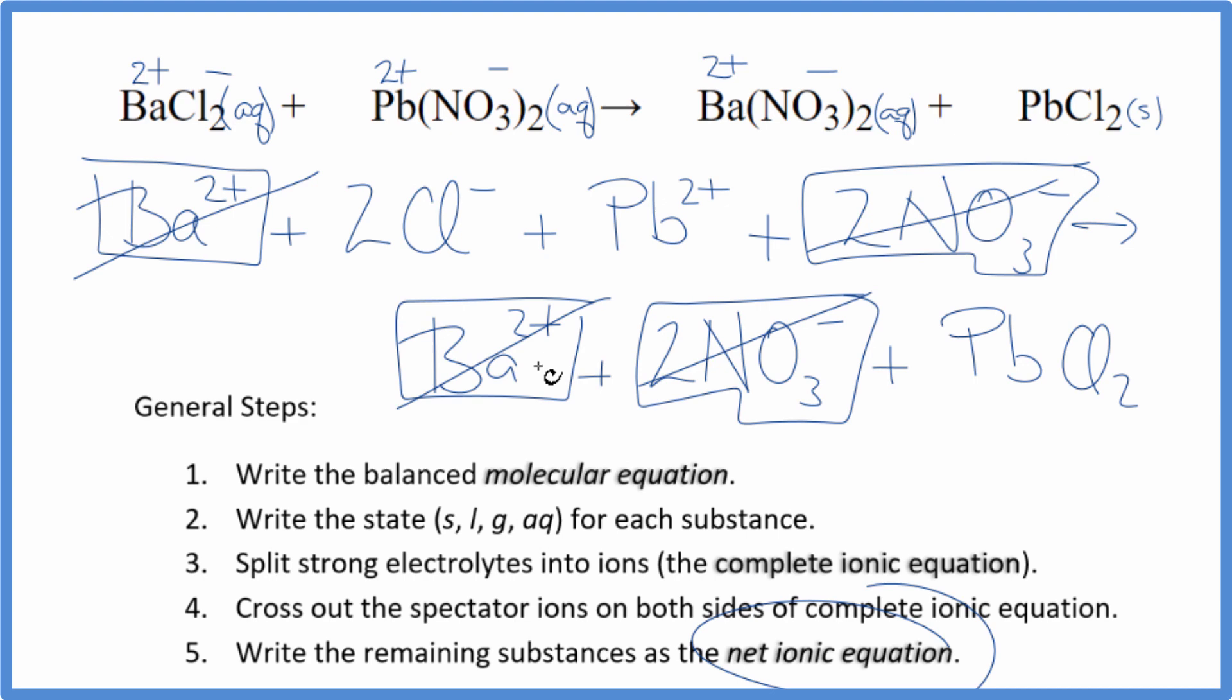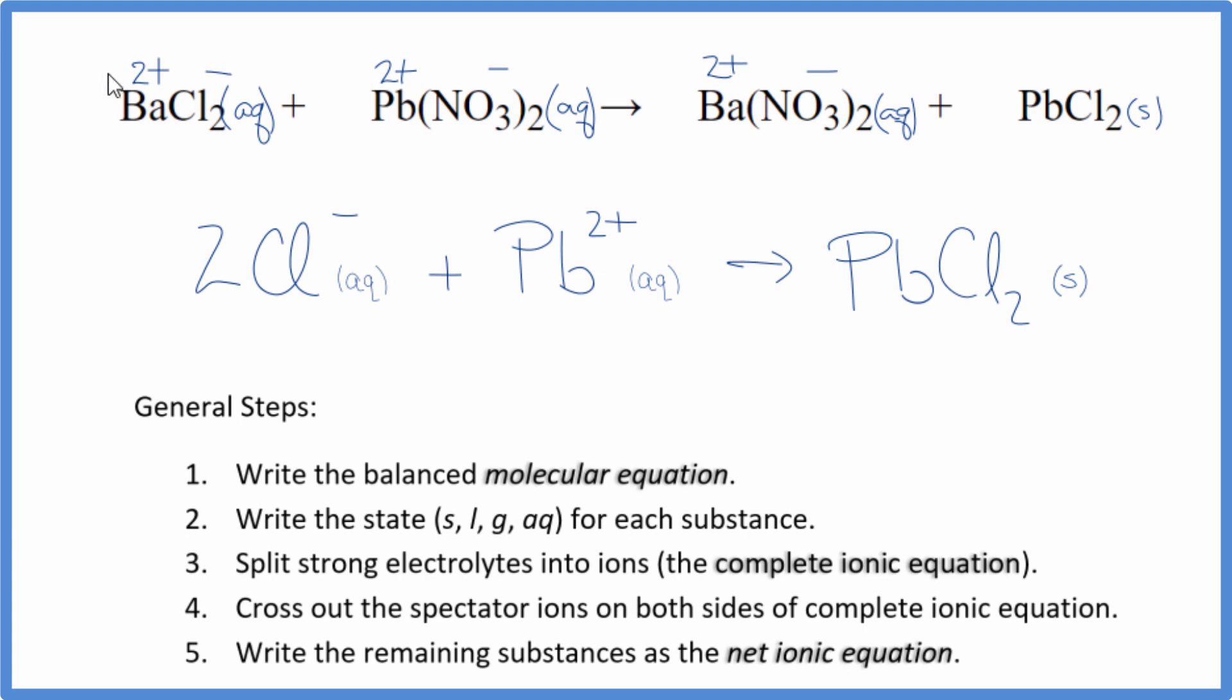What's left is the net ionic equation for BaCl2 plus Pb(NO3)2. I'll clean this up, write the states in. We'll have our net ionic equation. So this is the balanced net ionic equation for barium chloride and lead(II) nitrate.